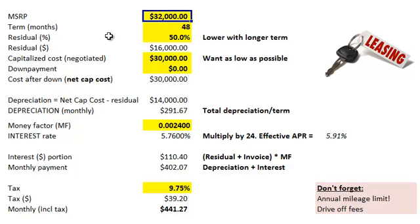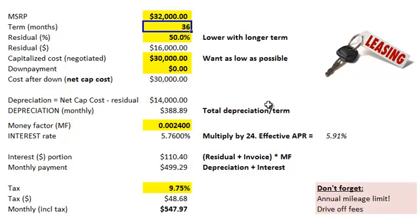So we start with the MSRP — Manufacturer's Suggested Retail Price. I've just got a hypothetical in here of $32,000. And then a lease term — typically there are different programs to go with. We have 36 months, or I've got a 48-month assumption in here.